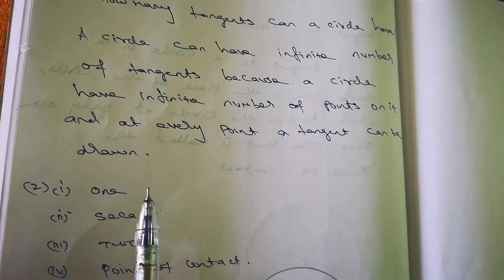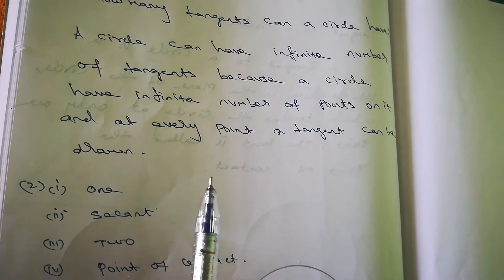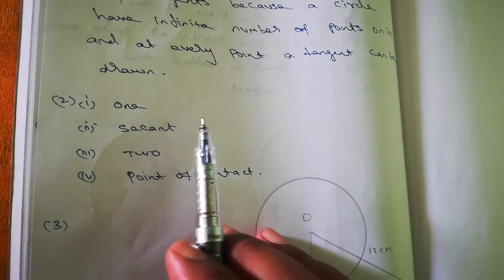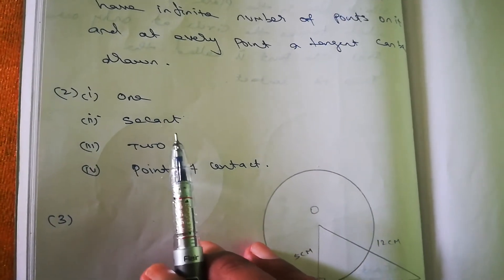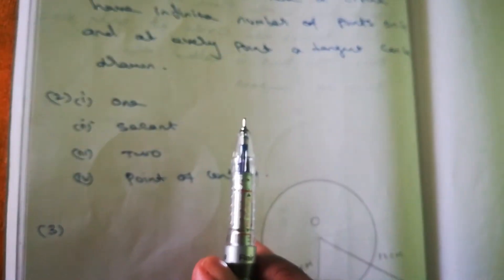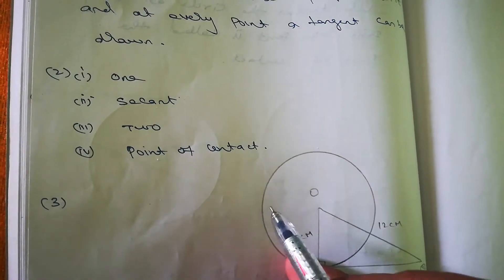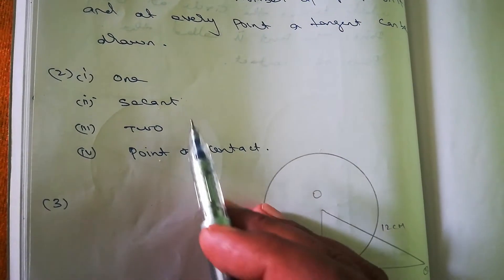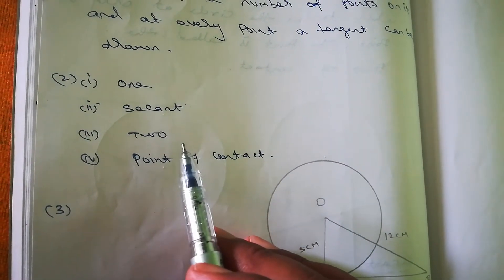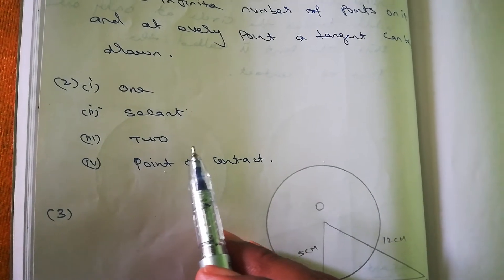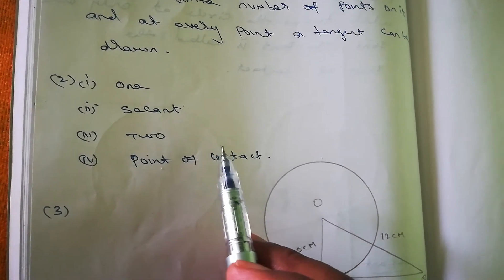Question number 2 — fill in the blanks: A tangent to a circle intersects it at only one point. A line that intersects a circle in two points is called a secant.